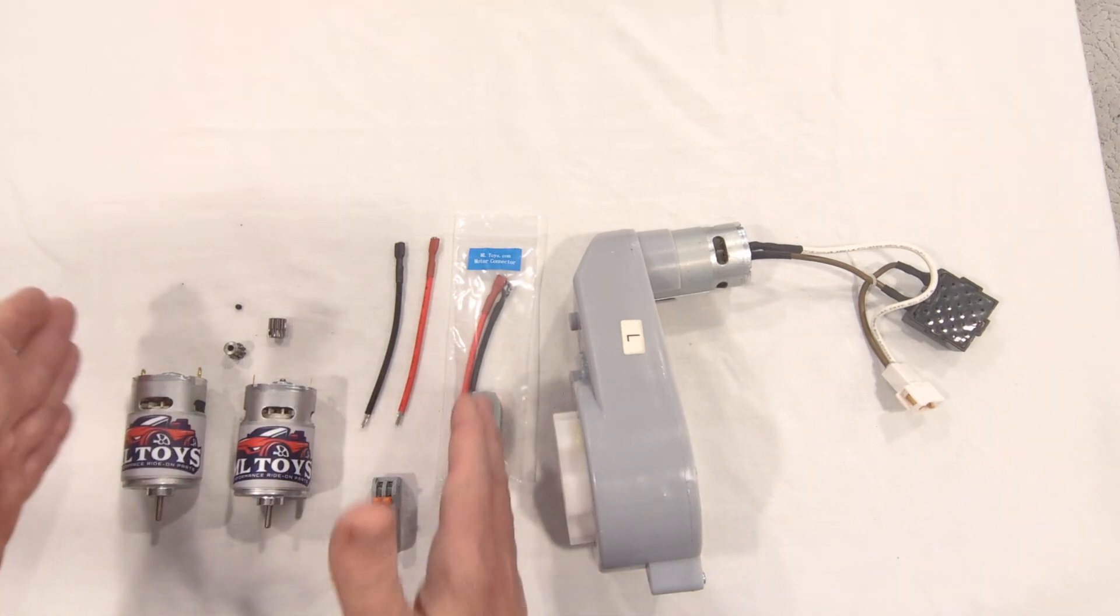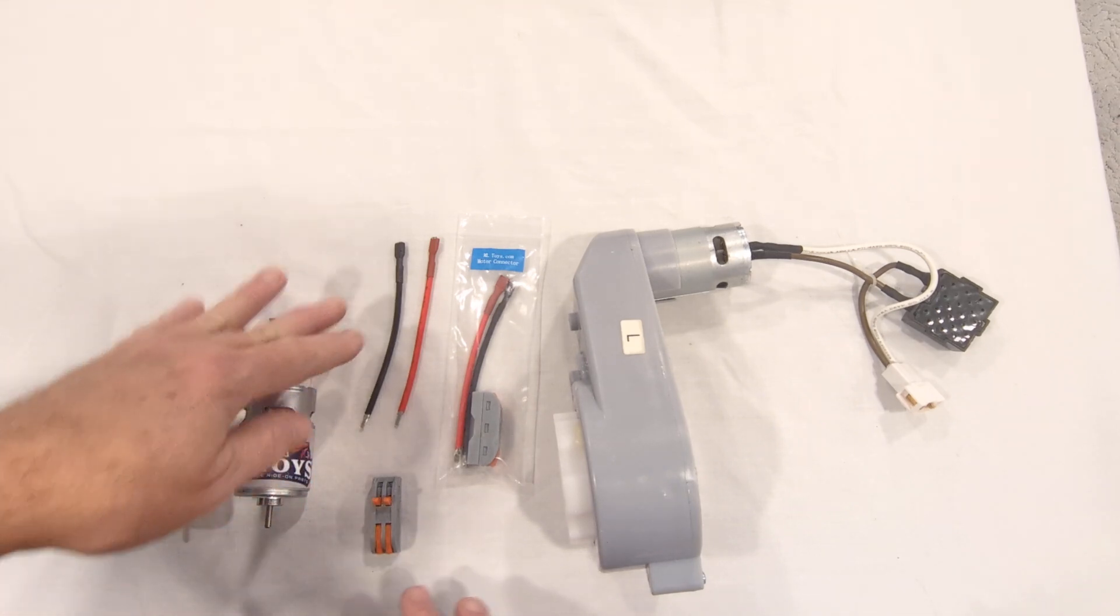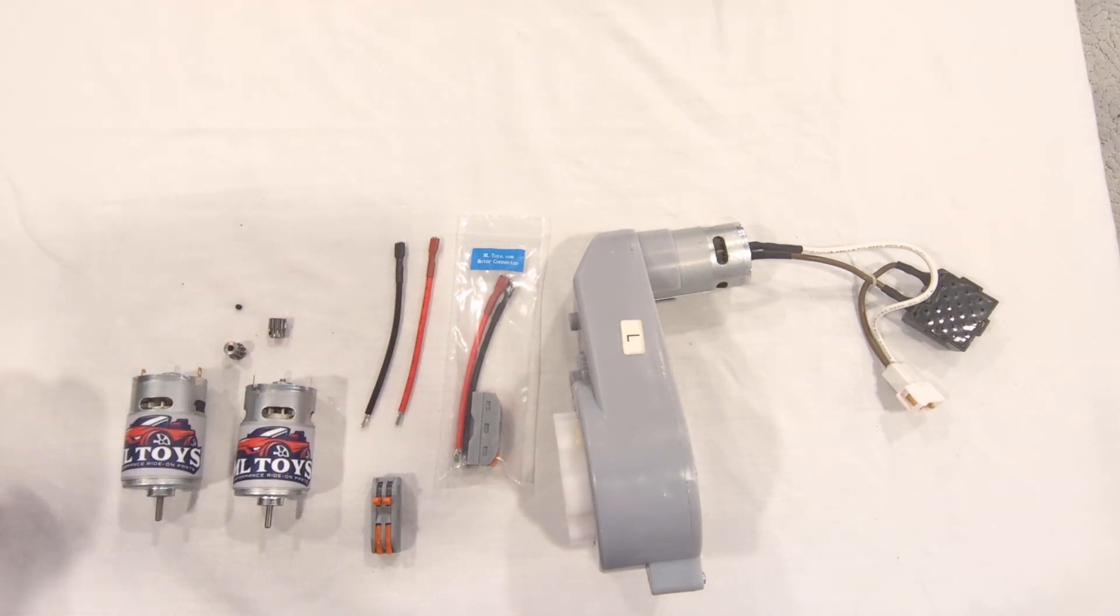When you get your kit, it's going to have everything you see here: two motors, two pinion gears with set screws, and two sets of motor wire connectors.